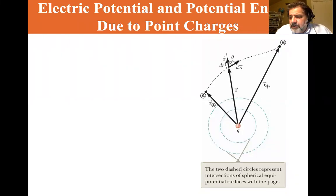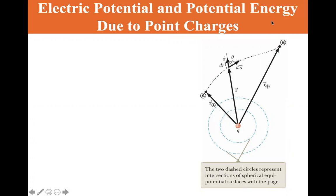We're at section 24.3, electric potential and potential energy due to point charges. Let me dismiss my image and we'll get started here. The two shaded dashed circles represent intersections of spherical equipotential surfaces with the page.